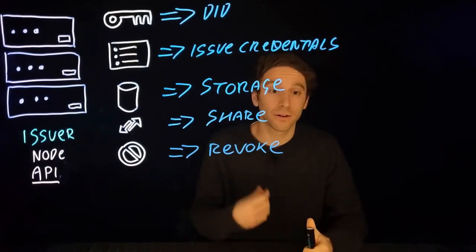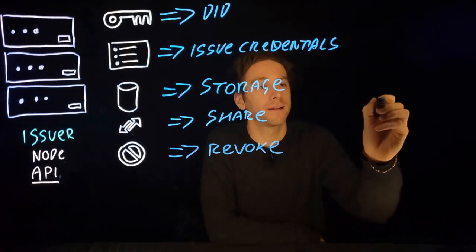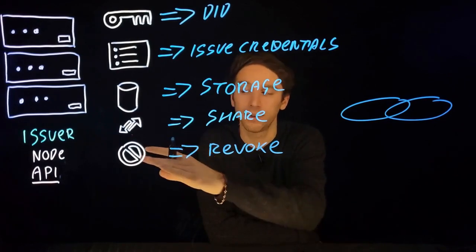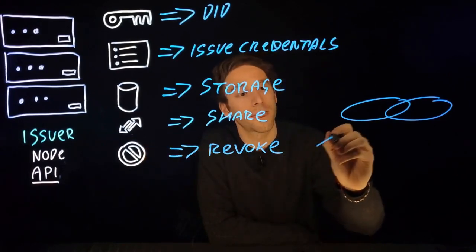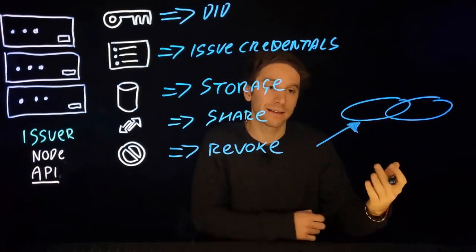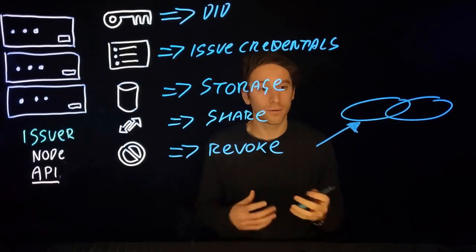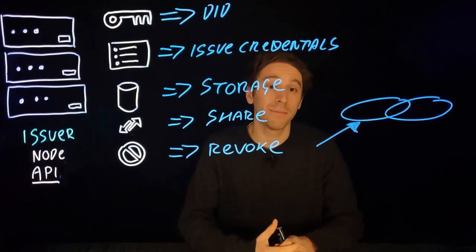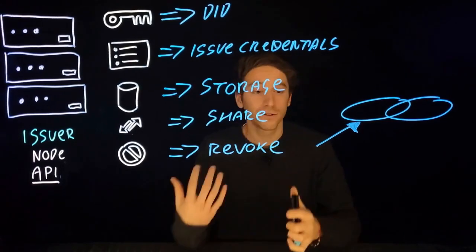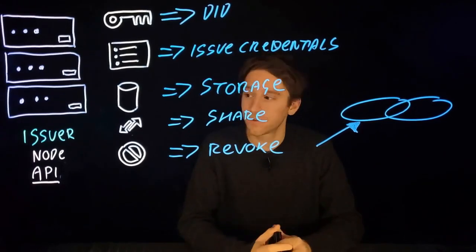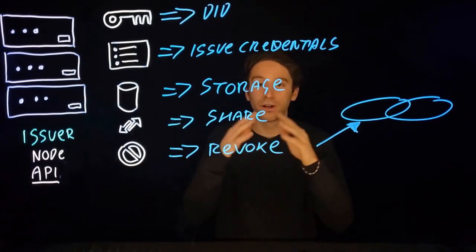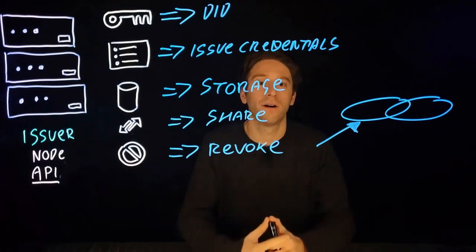The fifth API is the one that revokes a claim. Revoking means cancelling the functionality of a credential, and this happens by interacting with the blockchain. To revoke a credential, the issuer needs to make a transaction to the blockchain that will update their state, and in that state the information about the credential being revoked will be made available to the public — that's why we need the blockchain. These were the main functionalities of the issuer, and as you can see, through the issuer node API an issuer can manage the whole lifecycle of a credential.